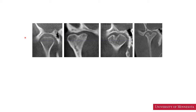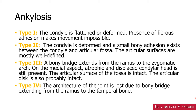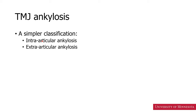Other developmental anomalies include bifid or trifid condyles — a mild form of bifid condylar head, more prominent depression, and sometimes a condyle may appear as two separate condyles. Other conditions involving the temporomandibular joints is ankylosis. This ranges from fibrous adhesion to small bony adhesion to a large bony bridge, and finally the architecture of the joint is lost due to a bony bridge from the ramus to the temporal bone. We may also use a simpler classification: intraarticular or extraarticular ankylosis.